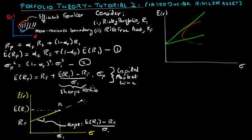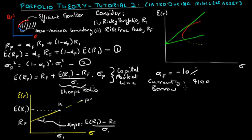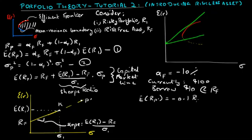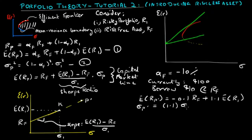Now suppose you want to extend from K to point P prime. How do we go from point K to point P prime? Suppose that you short the risk-free security, so alpha F equals negative 10 percent. Say currently you have $100 and you borrow $10 at the risk-free rate to invest in risky security. The expected return of this new portfolio P prime is just equal to negative 0.1 RF, because you went short the risk-free security and borrowed at the risk-free rate, plus 1.1 times the expected return on the risky portfolio. Similarly, the volatility of point P prime is just going to be equal to 1.1 times the volatility of the risky portfolio.